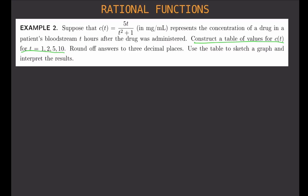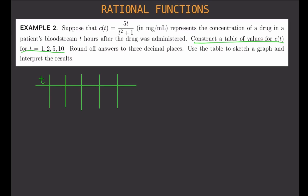We'll have T as the top row with columns, and below T is C of T. I'm going to include T = 0 as well, so the values are 0, 1, 2, 5, and 10.